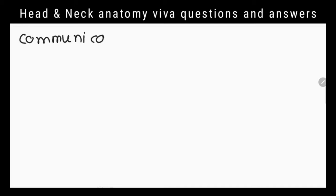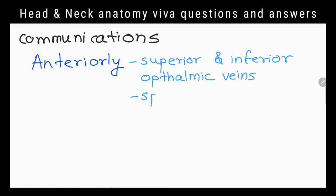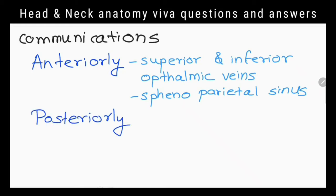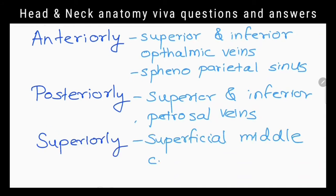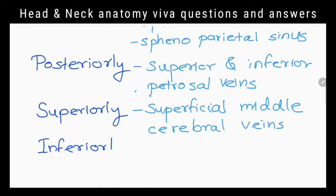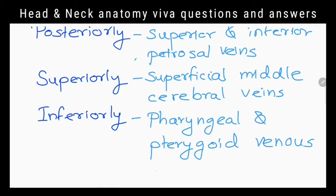What are the veins and venous sinuses that communicate with cavernous sinus? Anteriorly: superior and inferior ophthalmic veins and sphenoparietal sinus. Posteriorly: superior and inferior petrosal veins. Superiorly: superficial middle cerebral vein and small cerebral veins. Inferiorly: pharyngeal and pterygoid venous plexus.